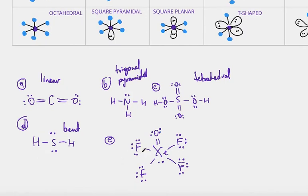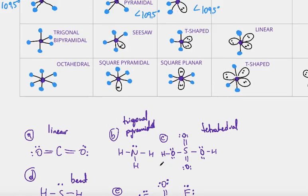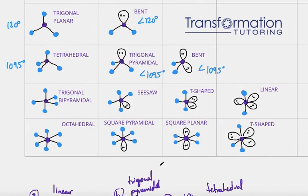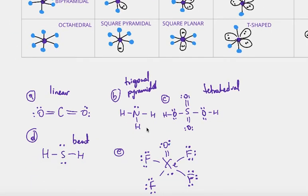Let's do the last one, E. I have xenon. It's connected to five atoms — four fluorines and one oxygen — so five atoms and one lone pair. I'm looking for a central atom connected to five other atoms and one lone pair. I find it here: five different atoms, one lone pair — it must be square pyramidal. So I'm going to say that this is square pyramidal.